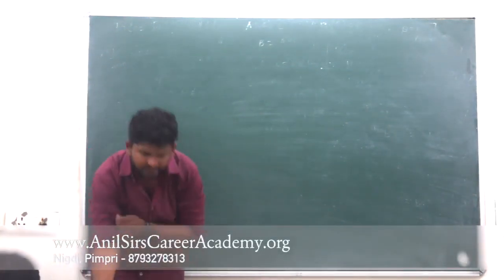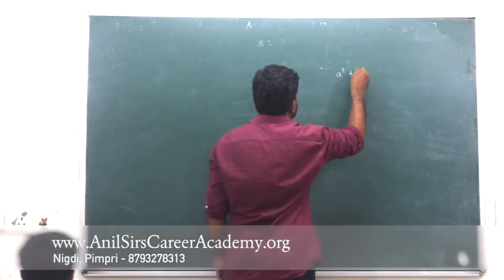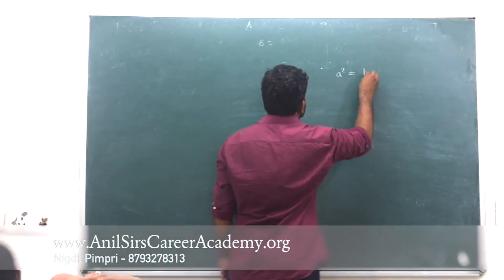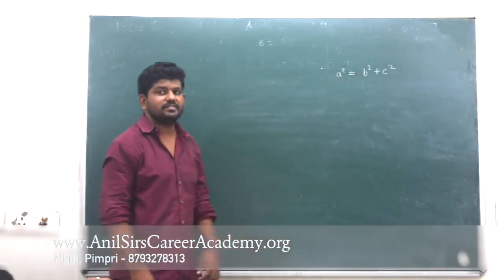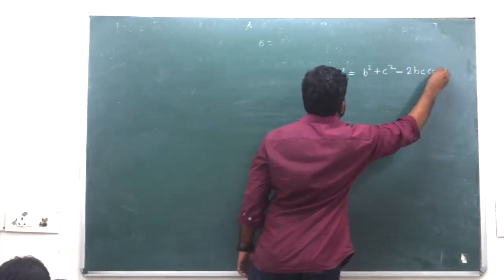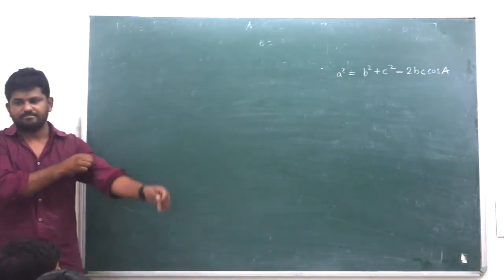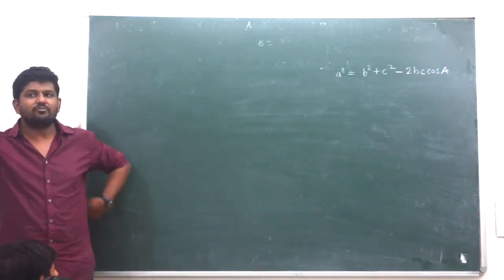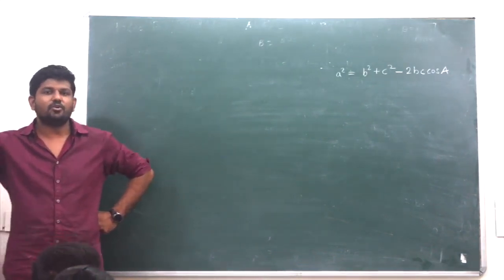a square equal to b square plus c square minus 2bc cosine A. This is the cosine rule. a square equal to b square plus c square minus 2bc cosine A.